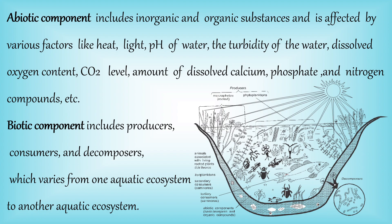The biotic components include living components, that is producers, consumers, and decomposers. Producers can be green algae, consumers can be fishes, and decomposers can be bacteria. They vary from ecosystem to ecosystem.